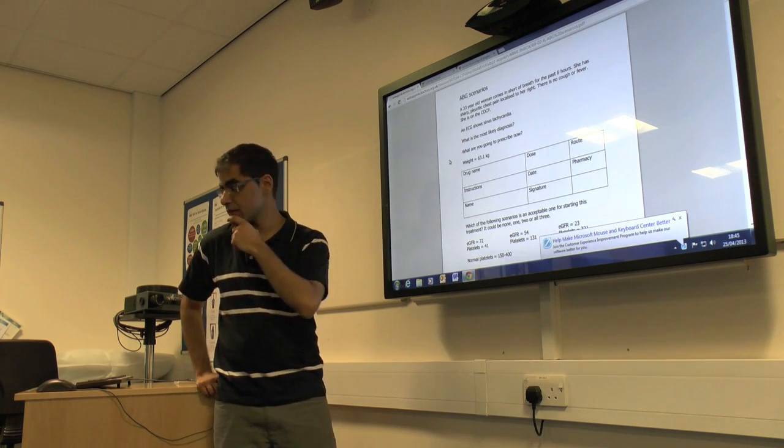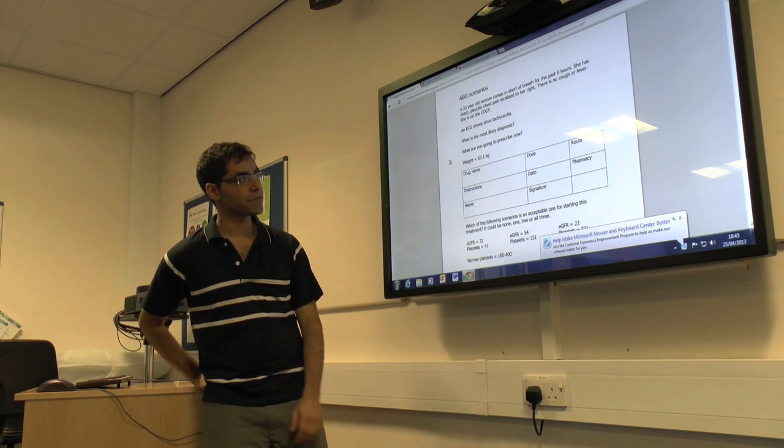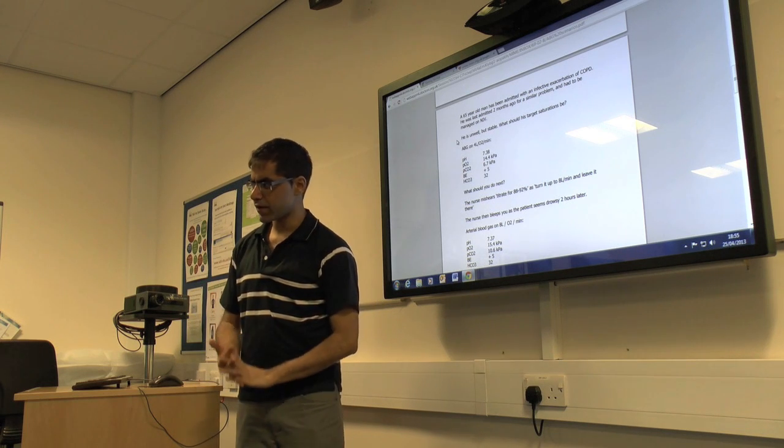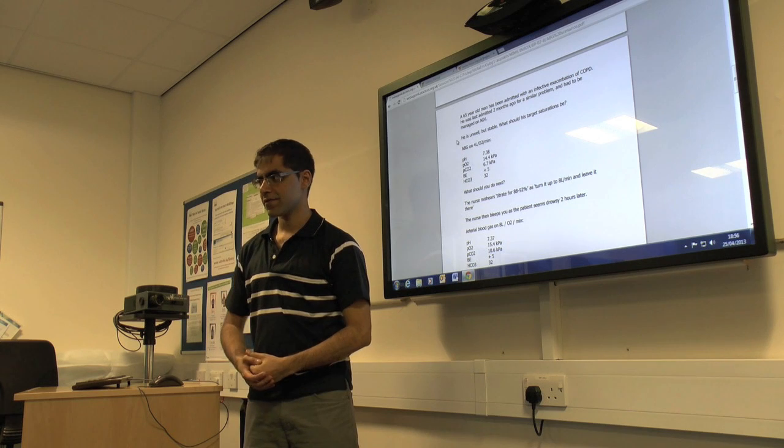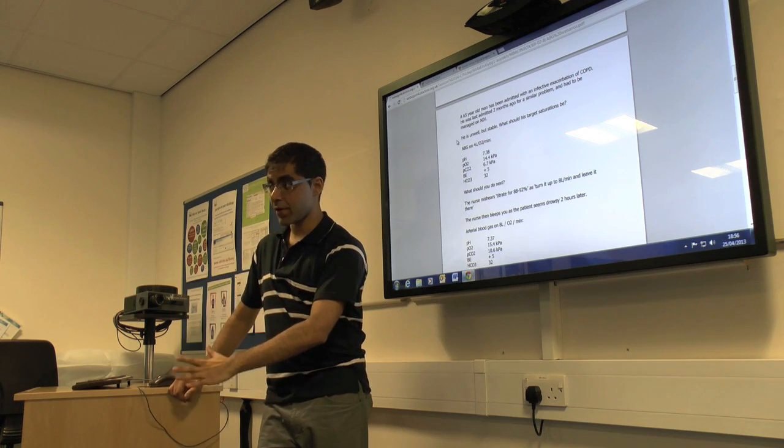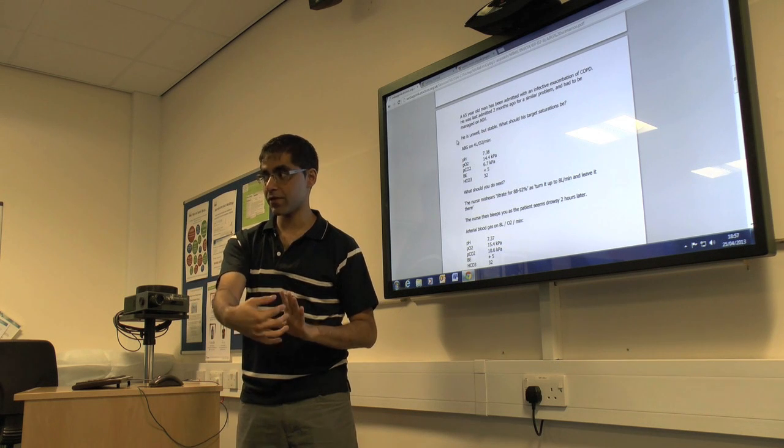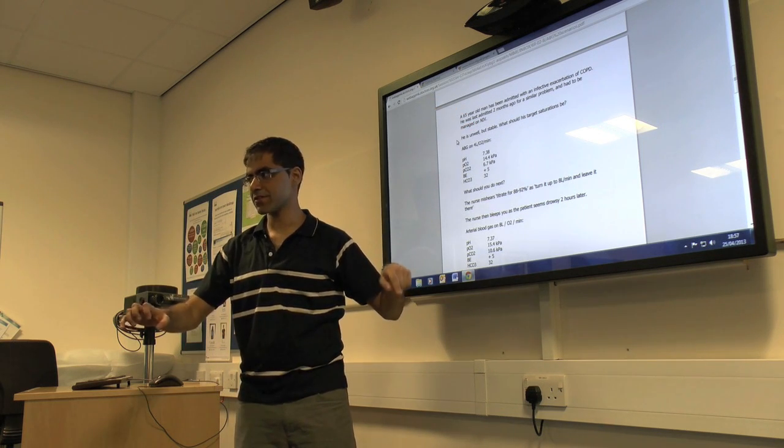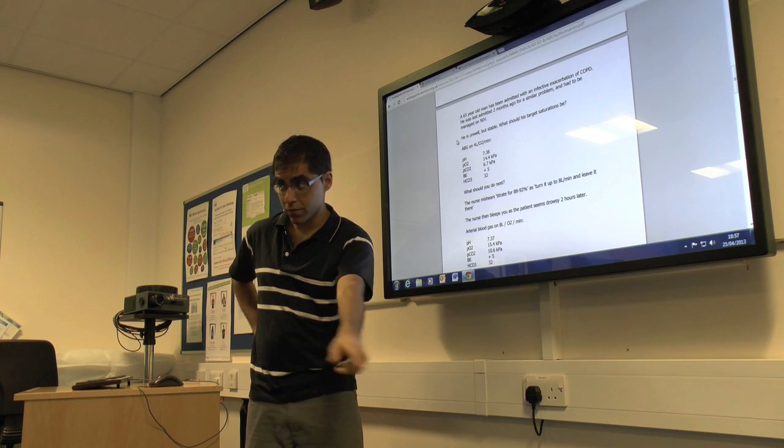This patient, at risk or not at risk? Not at risk. There's nothing in her history to suggest that she's at risk. So what would your target sats be? 94 to 98. Perfect. Cool. 65-year-old man admitted with an infective exacerbation, last admitted two months ago for a similar problem and had to be managed by NIV. We'll just stop there for a second. What does that tell you already? The fact he had to be managed on NIV. What does that tell you? It means you can't take it seriously. It means wake up, this is serious. You're worried, you're already stressed, you're more stressed. The fact he had to be managed on NIV showed that he did go into hypercapnic failure. So this is a guy who is at risk automatically, we know that. So you'd be a lot more cautious. He's unwell but stable. The reason I've written that is so that you don't have to bump them on high-flow oxygen because they're not unstable. What should his target saturations be? 88 to 92.